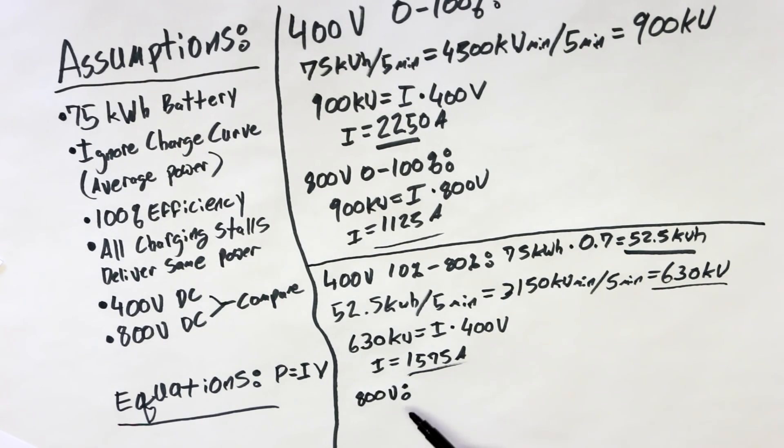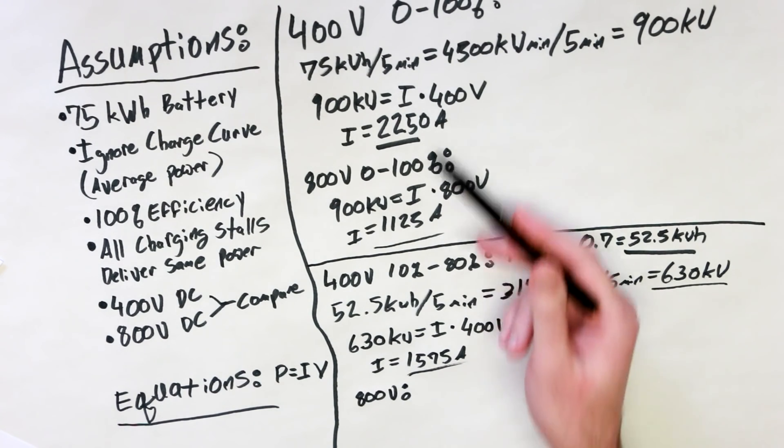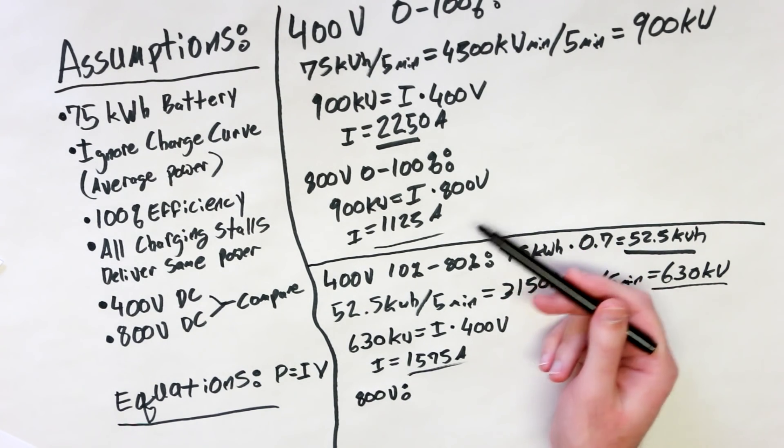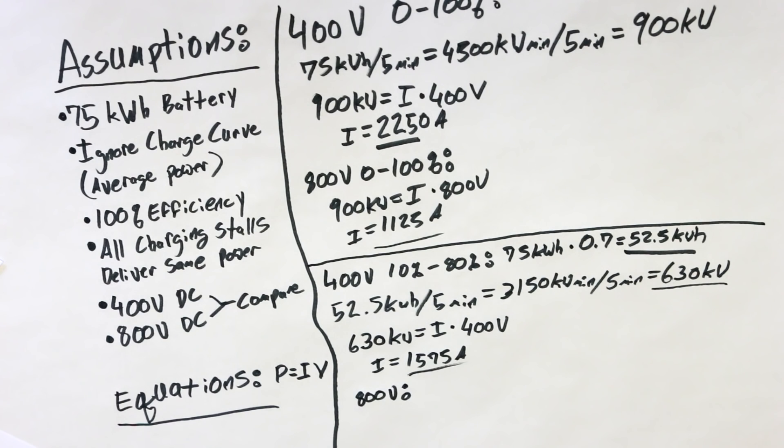Now, if we were to go to a hypothetical 800 volt system, as I showed up here, basically by doubling the voltage, you're cutting the current required in half. That would mean that our current requirement would be 787.5 amps. 787.5 amps is still a tremendous amount of current, but you can see we're starting to move in the right direction here.